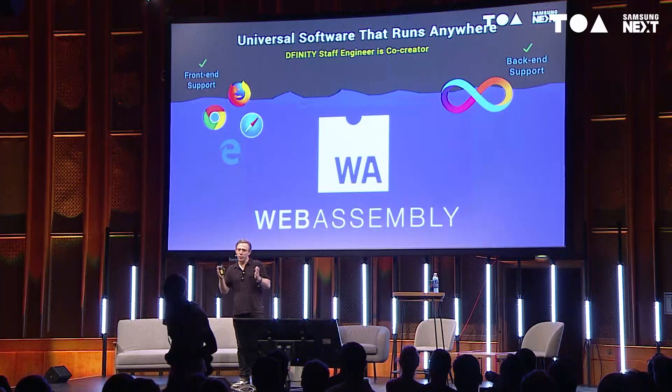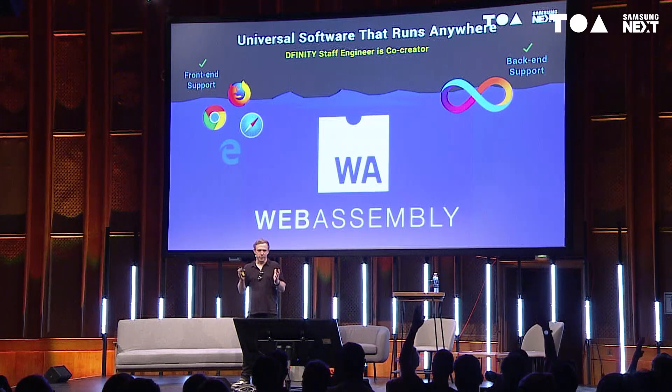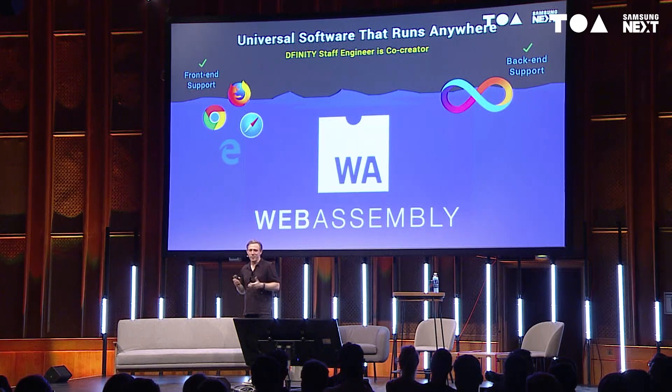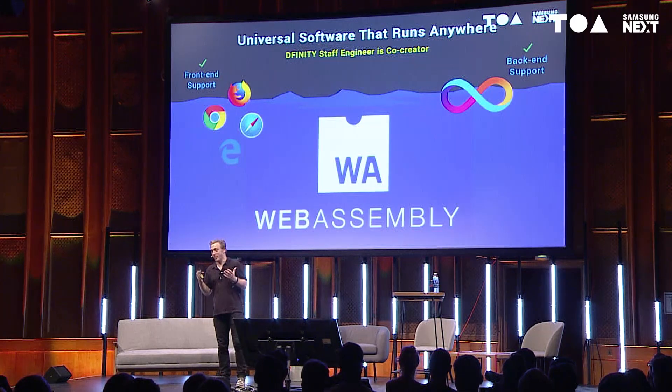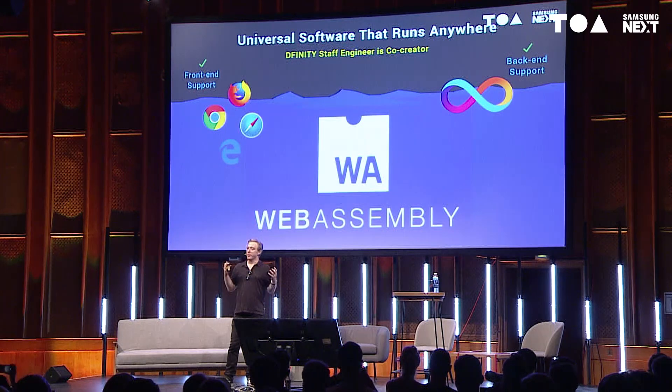What kind of software will the internet computer run? The answer is universal software that runs anywhere. It's a thing called WebAssembly. It's going to be absolutely huge. It's the first open standard for universal software that runs anywhere. You can think about it as a kind of Java that wasn't owned by Sun Microsystems and now Oracle — but of course, Java was designed about 25 years ago. WebAssembly incorporates all of the learnings that have happened since. It's a really fantastic system.